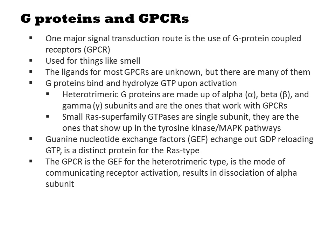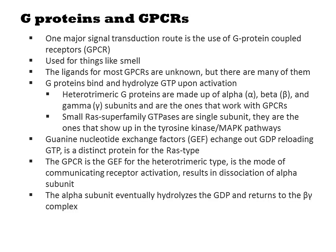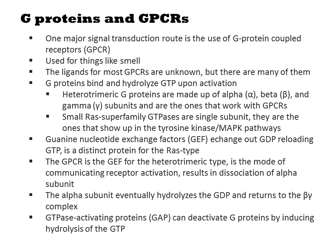The mode of communicating receptor activation results in dissociation of the alpha subunit. The alpha subunit eventually hydrolyzes the GTP and returns to the beta-gamma complex. Additionally, there are things called GTPase-activating proteins, or GAPs, that can deactivate G-proteins by inducing hydrolysis of the GTP.